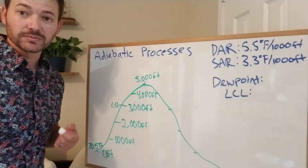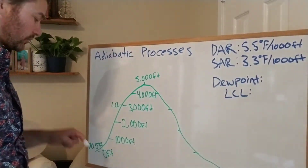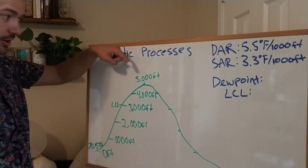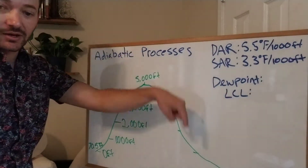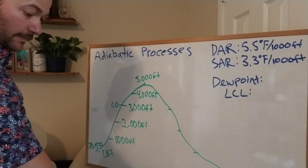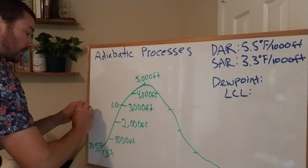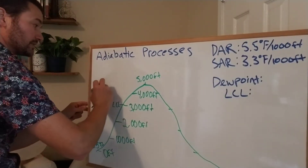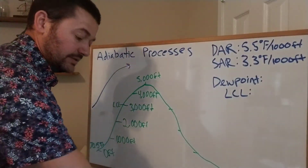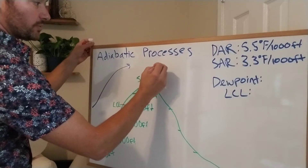This video is about adiabatic processes and calculating the rate of air temperature change as it goes up a mountain and then down the other side. Air going up cools, and as it descends the other side, it heats up.